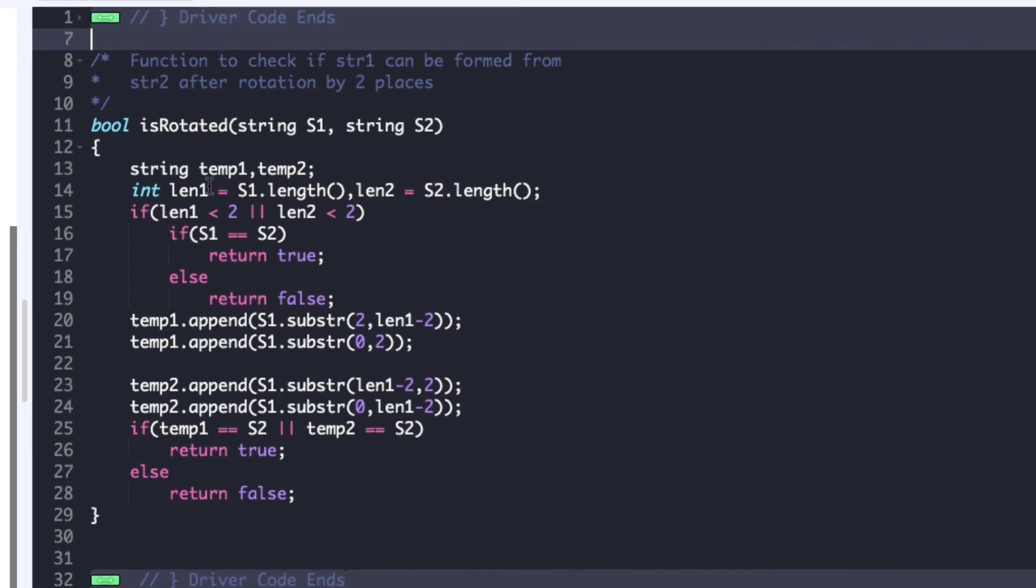We initially check whether either length1 or length2 is less than 2. If so then we compare both the strings, if they are equal then we return true else we return false.